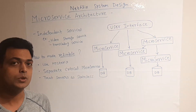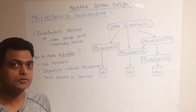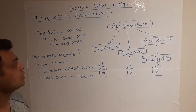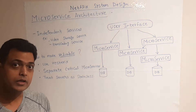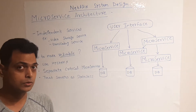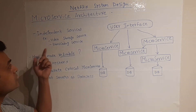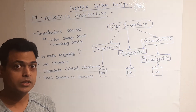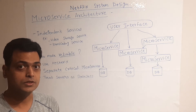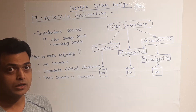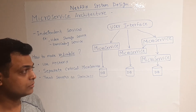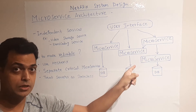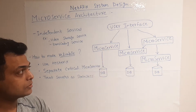In this video I'll be talking about the microservices architecture of Netflix. Netflix is built upon multiple independent microservices talking to each other. For example, there is a video storage service and a transcoding service — both coded and working independently of each other. They may depend on one another if required, or they can work independently.